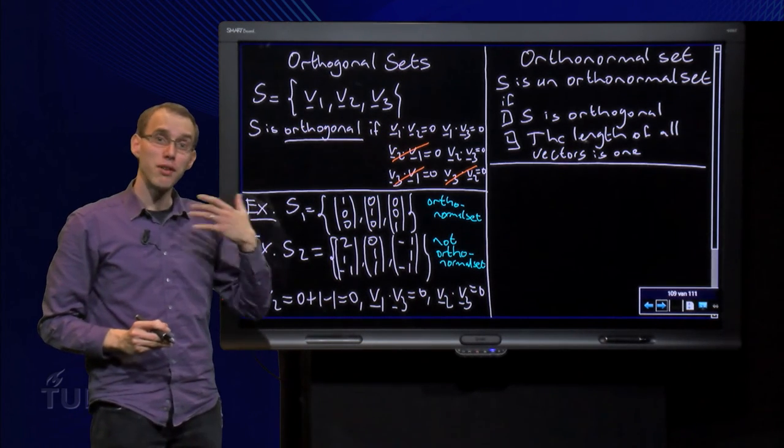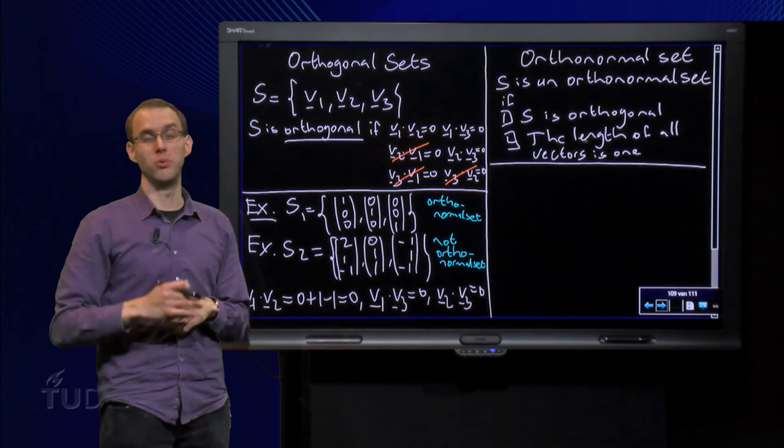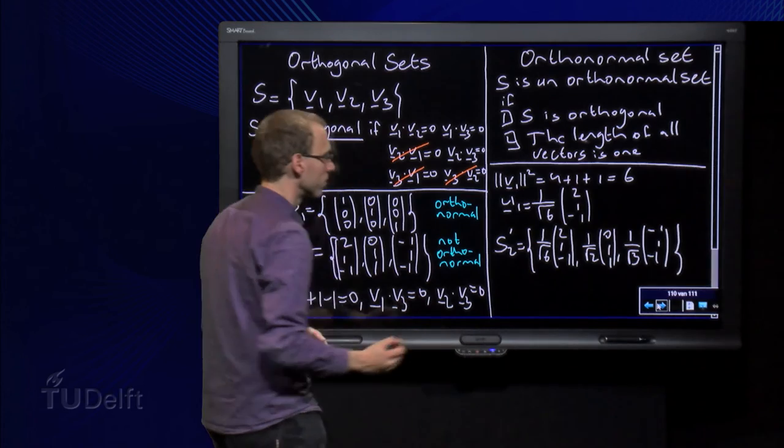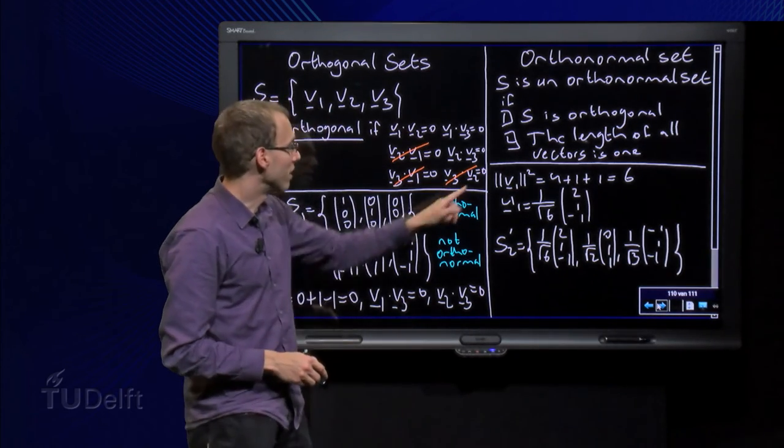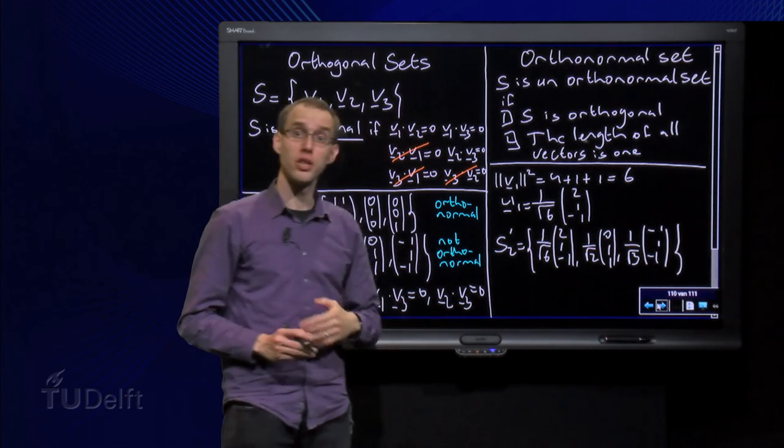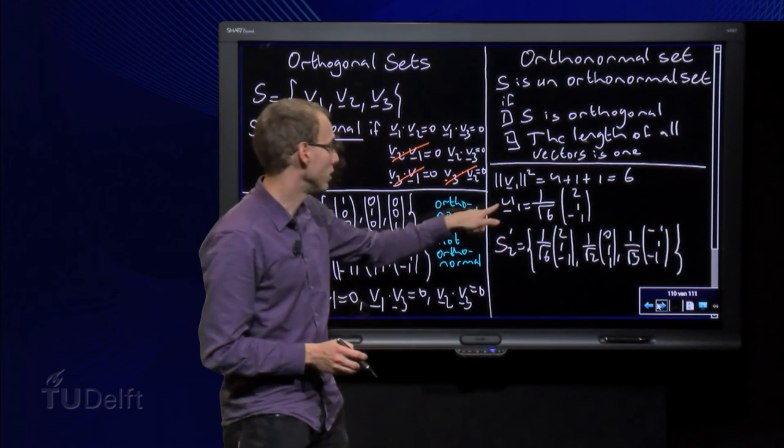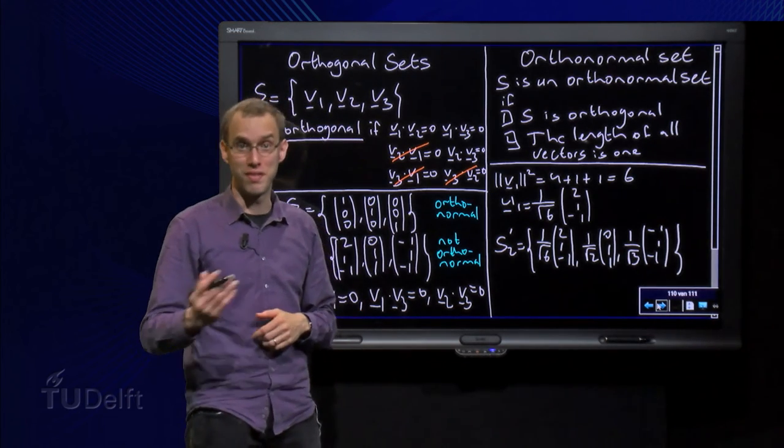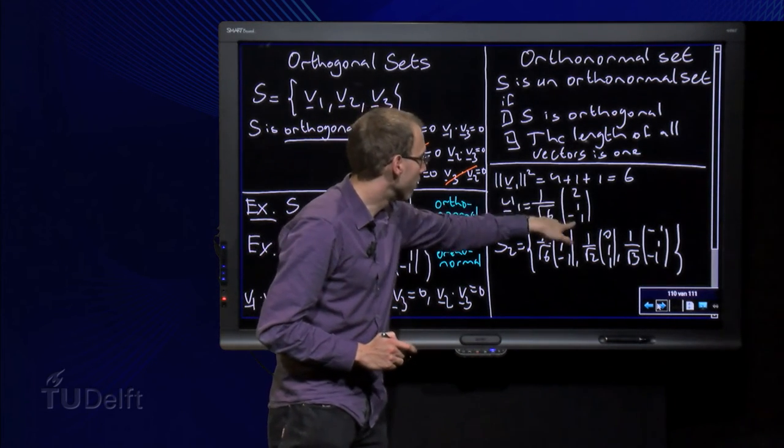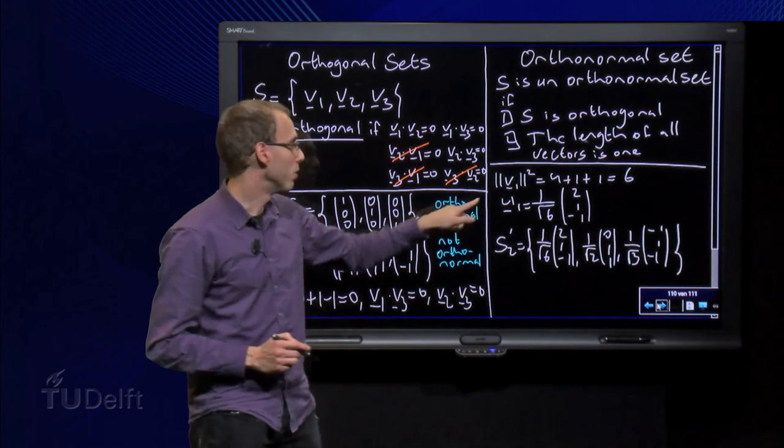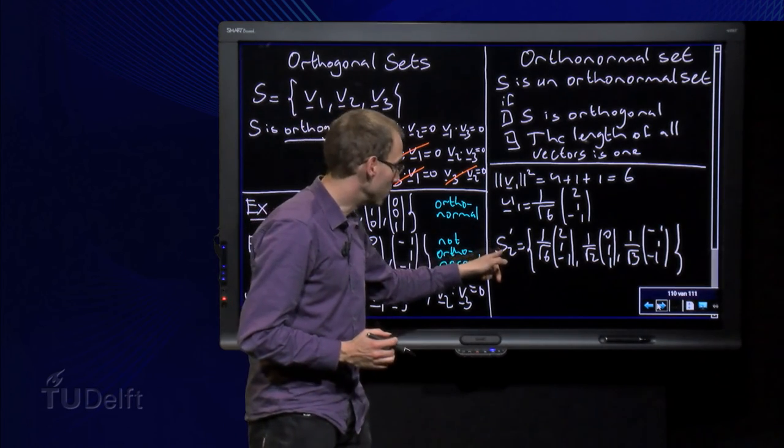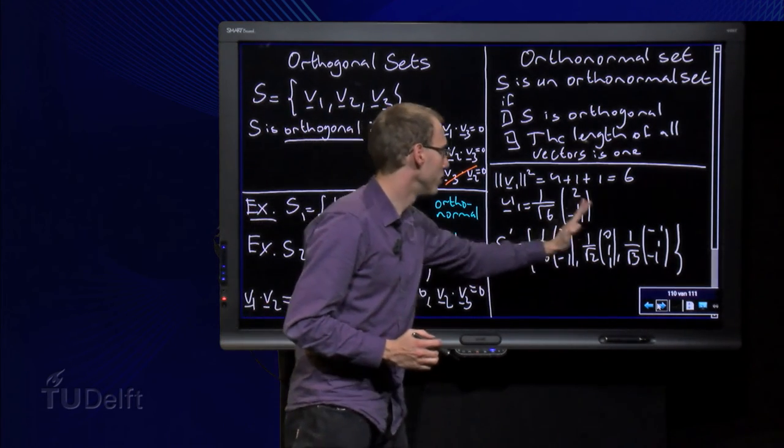However, if you have an orthogonal set, you can always turn it into an orthonormal set as follows. Look at V1: if the length of V1 squared equals 4 plus 1 plus 1 equals 6, so we can normalize the vector V1, turn it into a unit vector U1, by dividing by its length. So here we have U1, V1 divided by its length, and now U1 has length 1. We can do the same with V2 and V3. We can make a new set consisting of U1, U2, and U3.